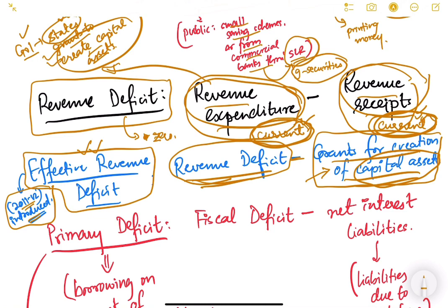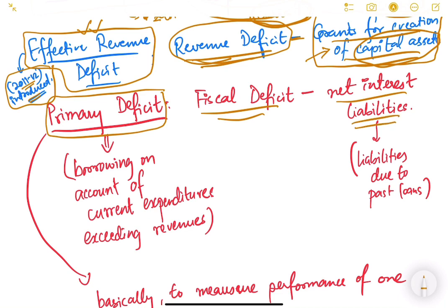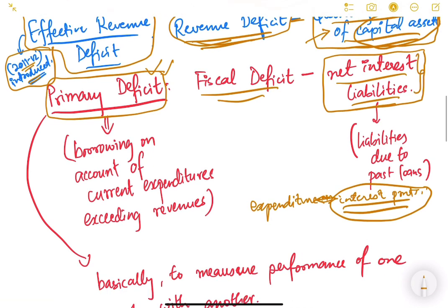The third concept is primary deficit. Primary deficit is fiscal deficit minus net interest liabilities. Our total expenditure also includes interest payments on previously borrowed loans. If we subtract those interest liabilities from fiscal deficit, we get the primary deficit. This is done because these interest liabilities are due to past loans, not current ones.